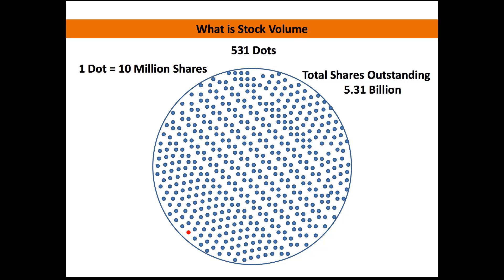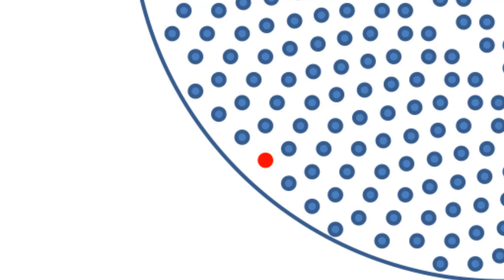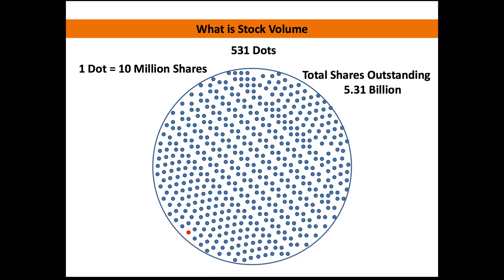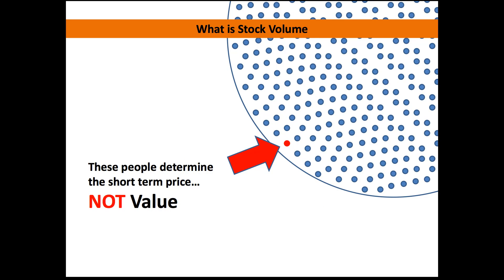When we look at our symbolic representation of all the shares in the company, you can see down at the bottom left I've got one of the little dots highlighted in red. When you look at that, it's just one dot out of all 531 dots inside of that circle — those are the people determining the market price. That one tiny dot is the group of people actually determining the market price for the entire company, for all the other shareholders. And what you've got to keep in mind is those people aren't determining the value of the company — they're simply determining the short-term price.